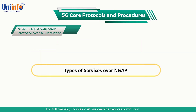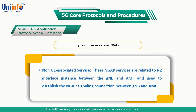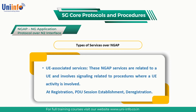Next, we will discuss types of services over NGAP. The signaling over NGAP provides two types of services. First, non-UE associated service — these NGAP services are related to the end-to-end interface instance between GnodeB and AMF and are used to establish the NGAP signaling connection between GnodeB and AMF, handle some overload situations, and to exchange GnodeB and AMF configuration data. Second, UE associated services — these NGAP services are related to a UE and involve signaling related to procedures where UE activity is involved, for example, at registration, PDU session establishment, deregistration, etc.